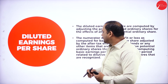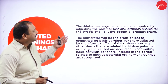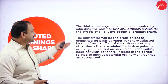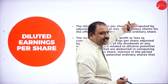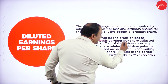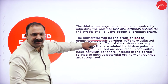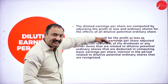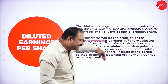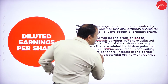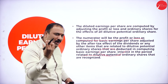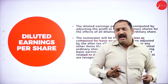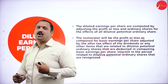The diluted earnings per share is computed by adjusting the profit and loss of ordinary shares for the effects of all dilutive potential ordinary shares. The numerator will be the profit or loss as computed for basic earnings per share, adjusted for the after-tax effect of any dividends or other items relating to dilutive potential ordinary shares. We need to understand the dilutive potential of every share so that it gets recognized. Diluted EPS matters a lot for most companies.